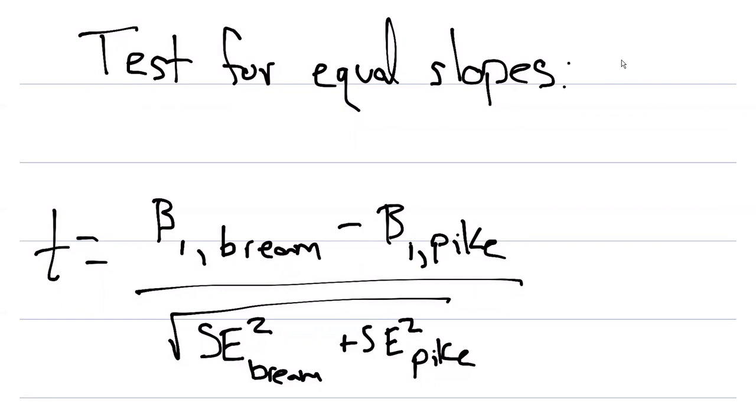By doing that you can think of this as pooling the different standard errors in both data sets. We're going to use that test statistic and plug in our numbers for our simple linear regressions.